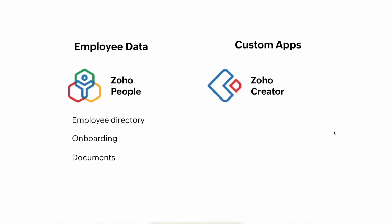We also have employee data and custom apps. Employee data covers check-ins and leave maintenance, and if you'd like an onboarding process for employees, you can use Zoho People. If you want a unique application specifically tailored for your business and defined by you, go for Zoho Creator. If you're a coder you can do a lot with it, but even without coding you can use drag-and-drop to build forms. Creator is tightly integrated with the maximum set of Zoho apps, making data push between applications very easy.